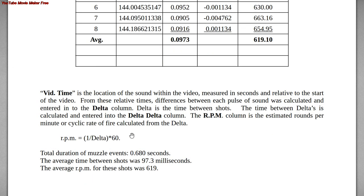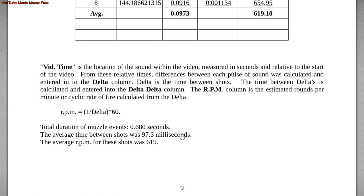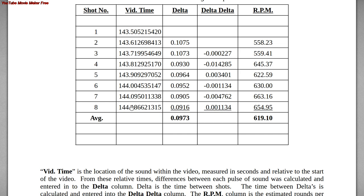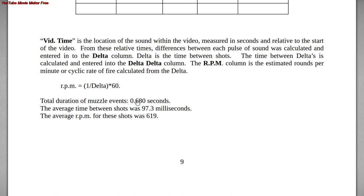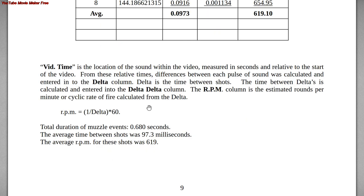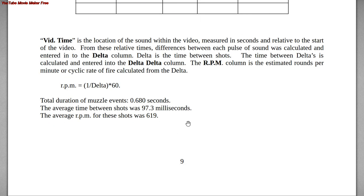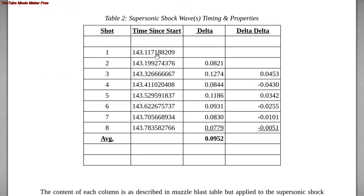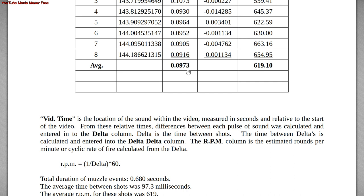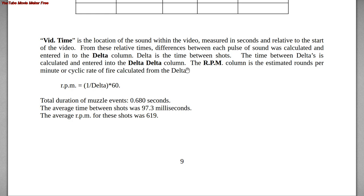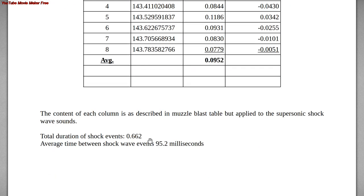From first to last muzzle the grand total duration is 0.680 seconds. Comparing to the supersonic shock waves: the average time between each shock wave was 95.2 milliseconds — slightly shorter than the average muzzle time — and the total duration was 0.662 seconds, also shorter. The sonic shock wave does not preserve the timing of the muzzles — the muzzles could be very regular while the corresponding supersonics are very irregular — and the total length difference between the two won't vary by more than the lag value.